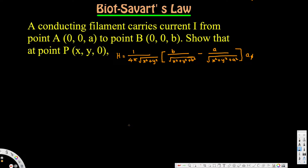Let's look at this problem. This question is asking: a conducting filament carries current i from point A to point B. Show that at point P, the magnetic field intensity H is equal to i over 4π times rho, times b over square root of x squared plus y squared plus b squared, minus a over square root of x squared plus y squared plus a squared, in the a-phi direction.